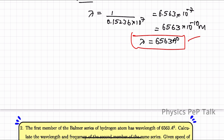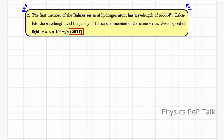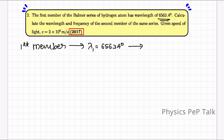The first member of the Balmer series of the hydrogen atom has a wavelength of 6563 Å. Calculate the wavelength and frequency of the second member of the same series. Given speed of light c = 3 × 10⁸ m/s. This question is from 2017. For the Balmer series, n1 = 2. The first member has n2 = 3, so λ1 = 6563 Å.